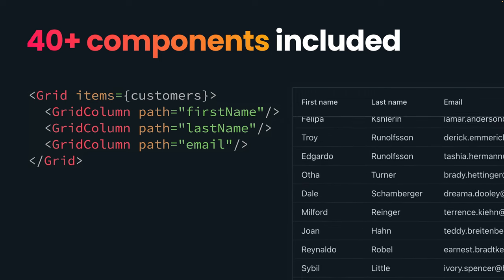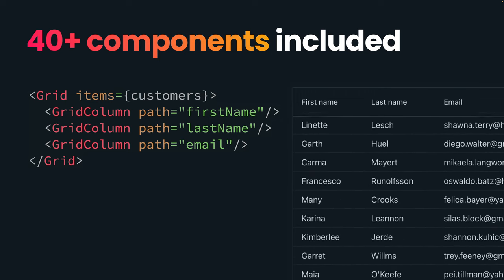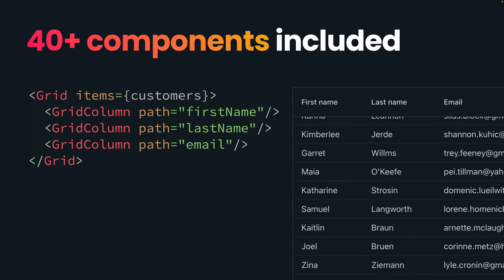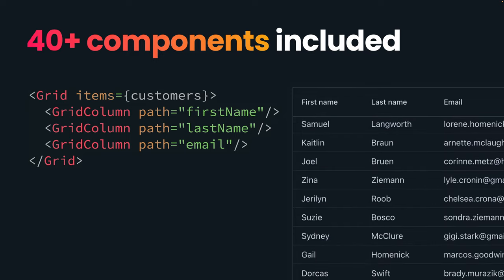HILA comes with 40 plus UI components included, so you can spend less time hunting components and more time building your application.